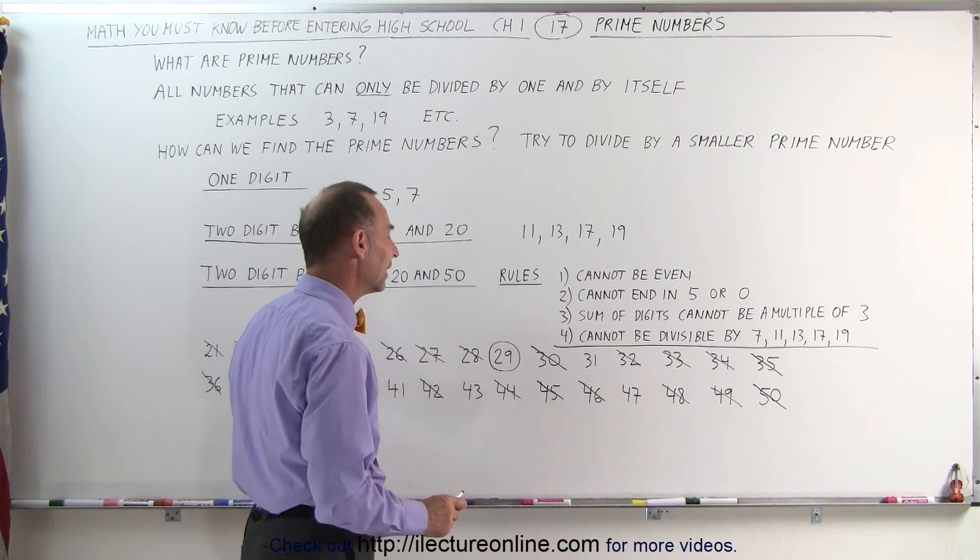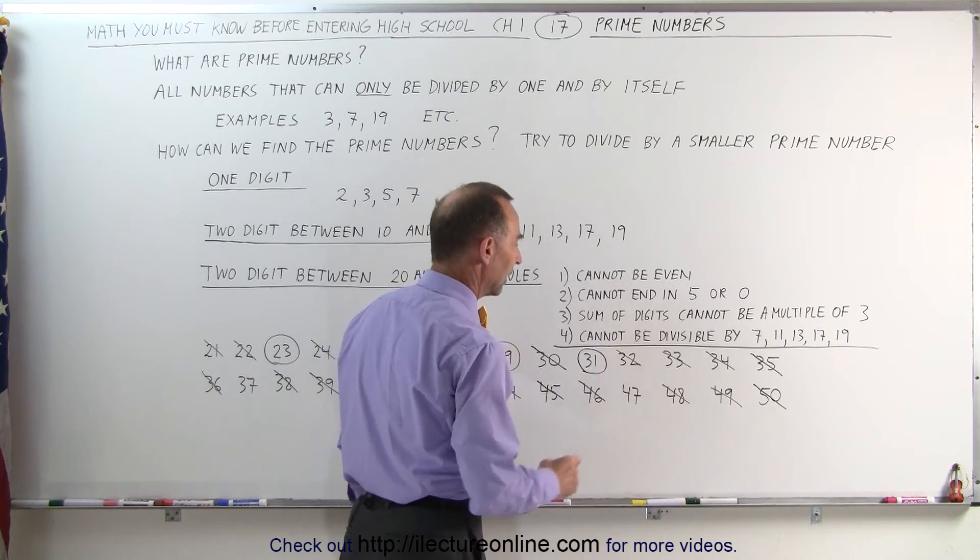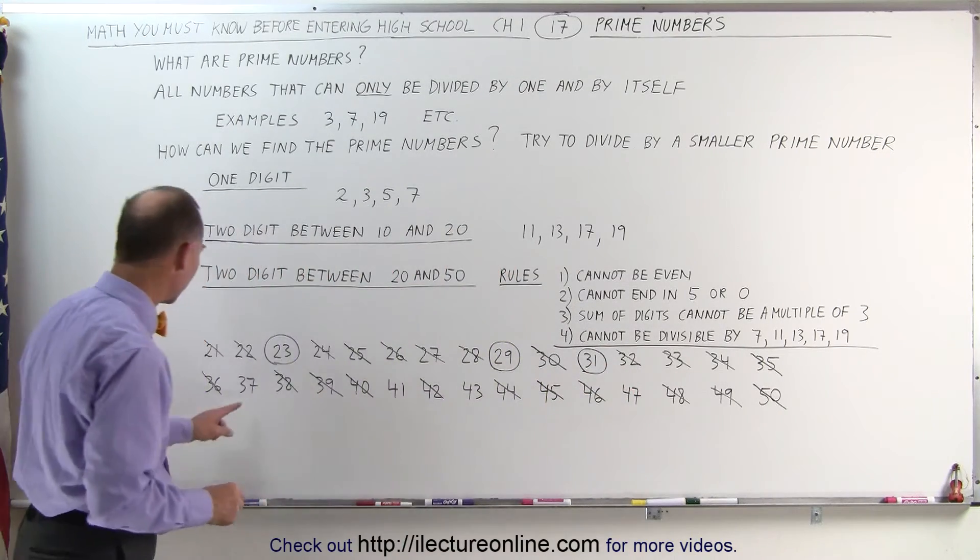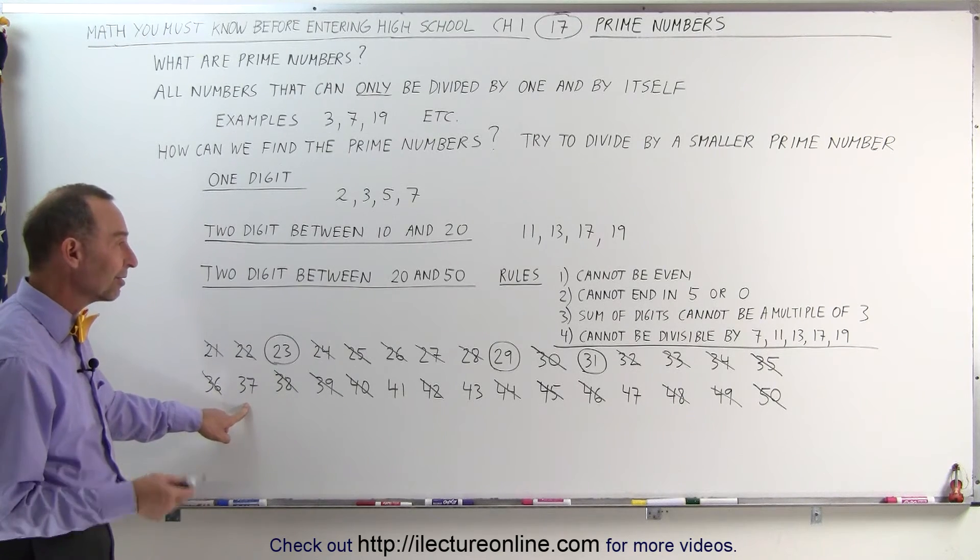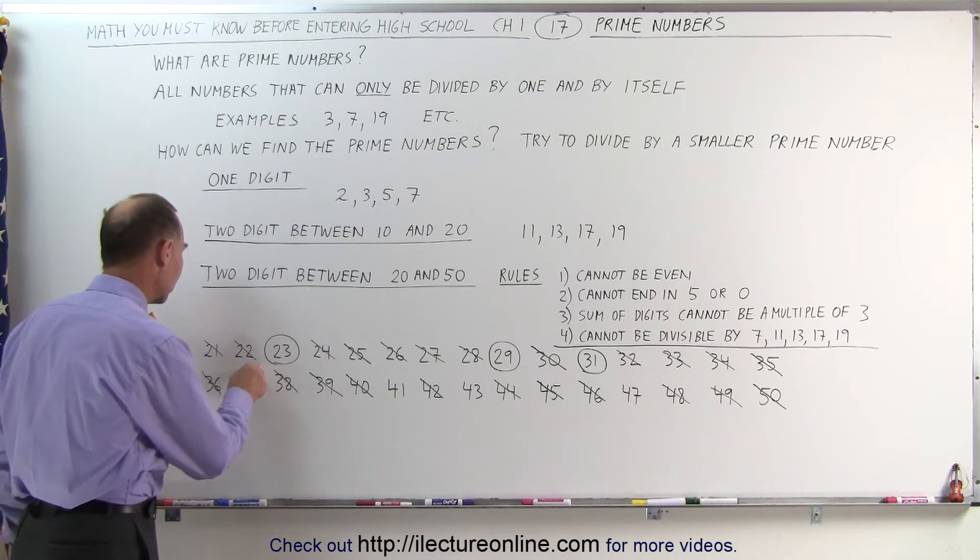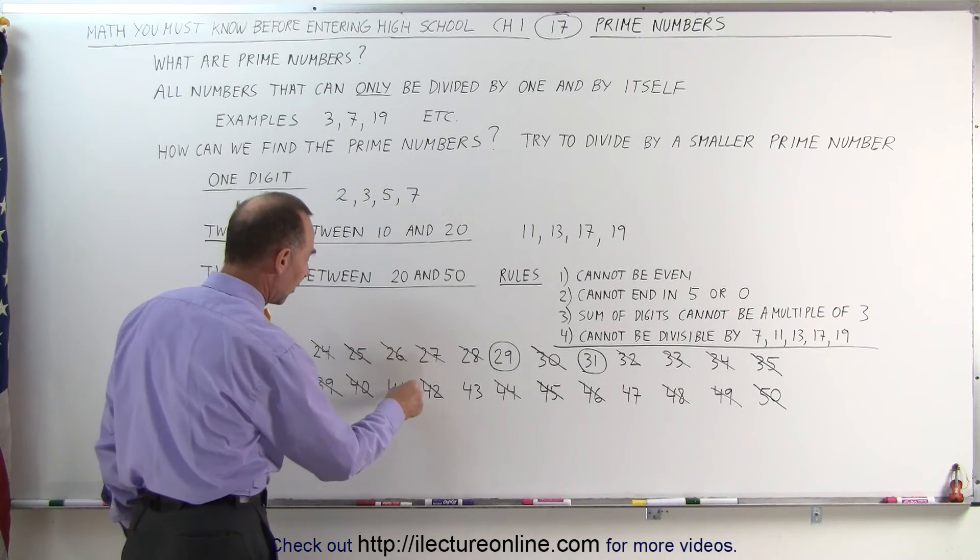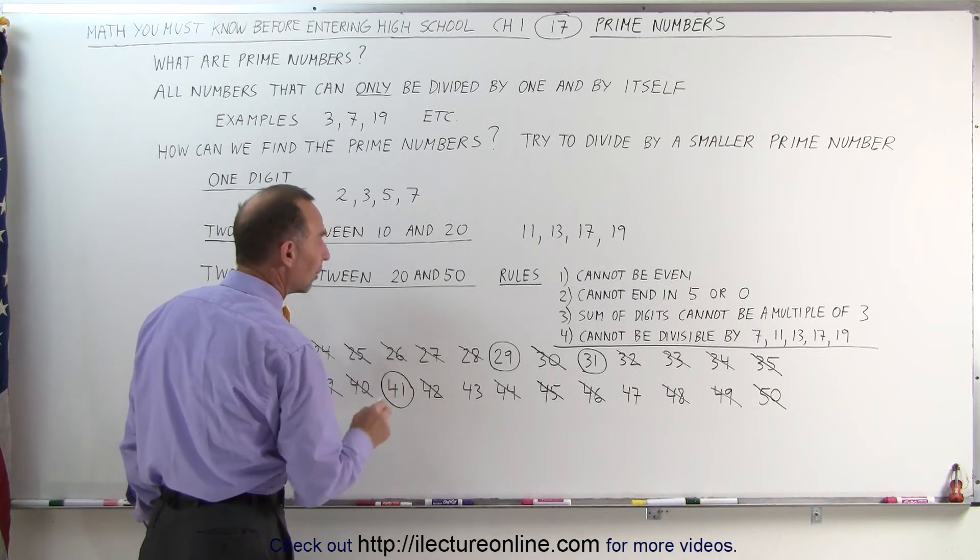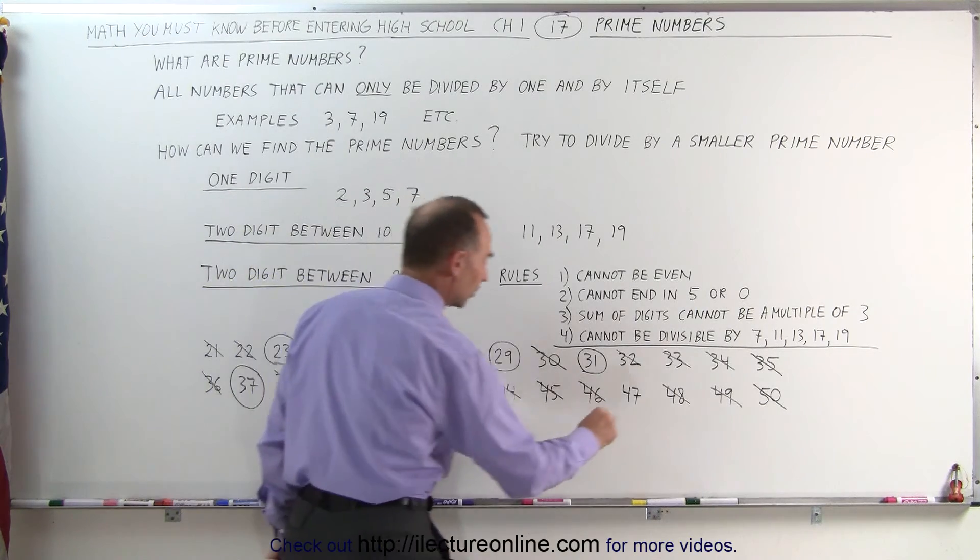And let's come over here, the number 37. Now, it's divided by 7, by 11, by 13, by 17, nothing like that. So there's another prime number. And the number 41, that also falls in that category. The number 43 also falls in that category. And finally, the number 47.